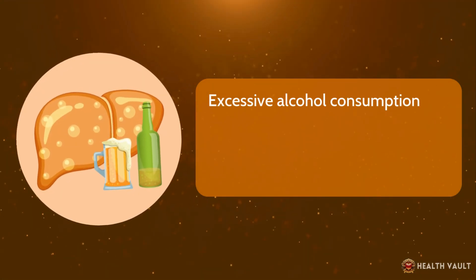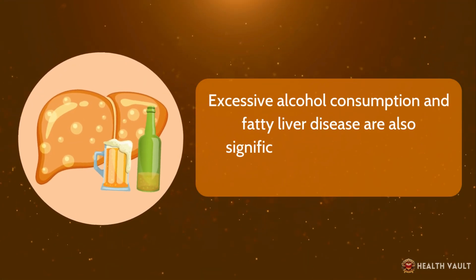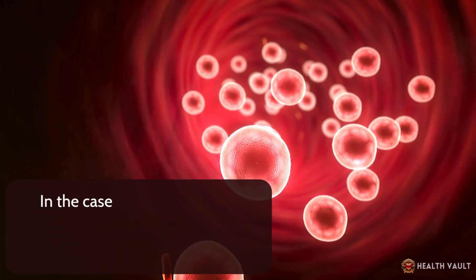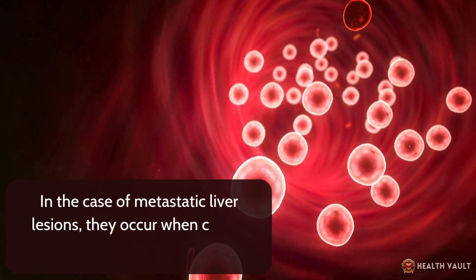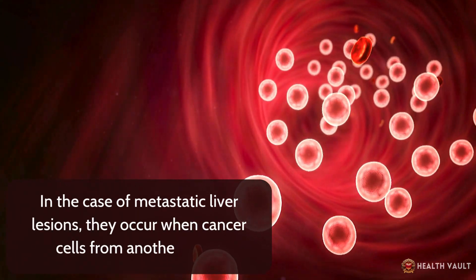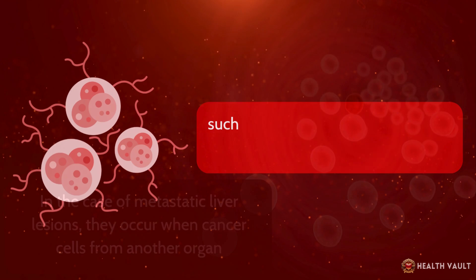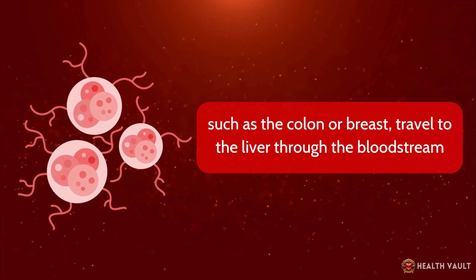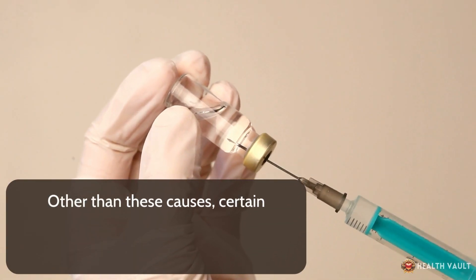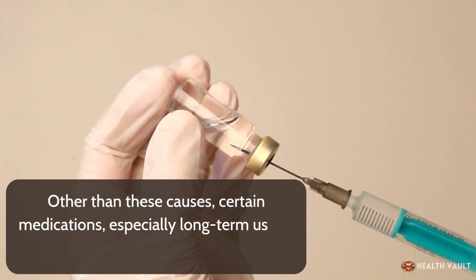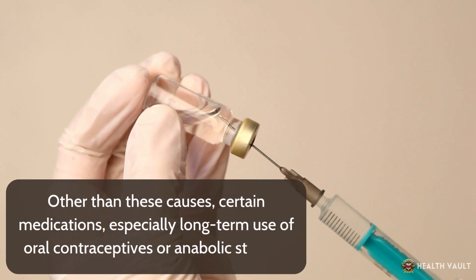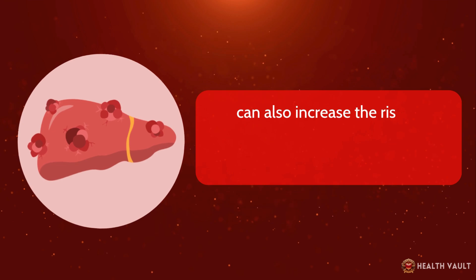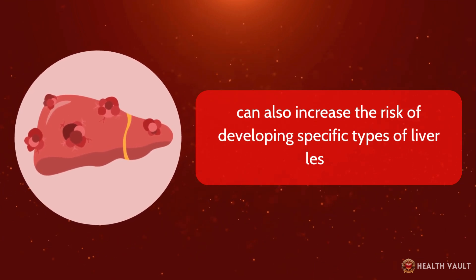Excessive alcohol consumption and fatty liver disease are also significant contributors to liver cancer development. In the case of metastatic liver lesions, they occur when cancer cells from another organ, such as the colon or breast, travel to the liver through the bloodstream. Certain medications, especially long-term use of oral contraceptives or anabolic steroids, can also increase the risk of developing specific types of liver lesions.